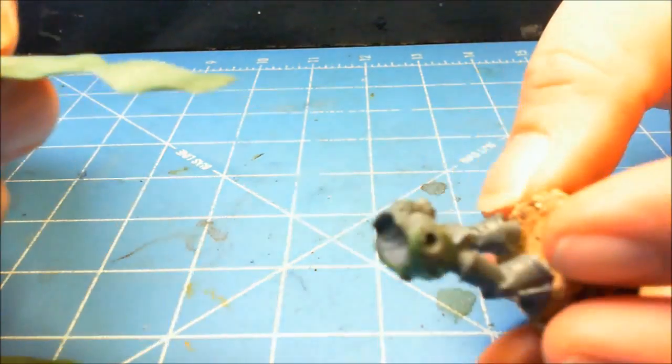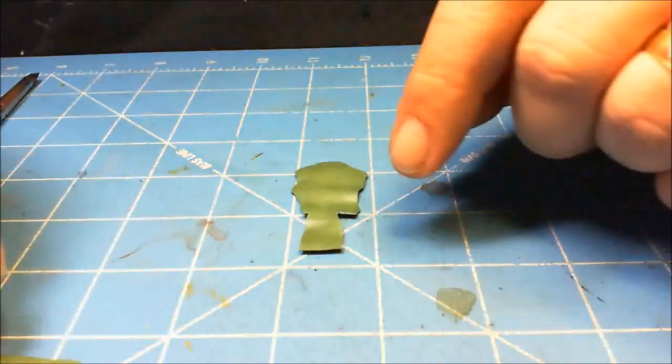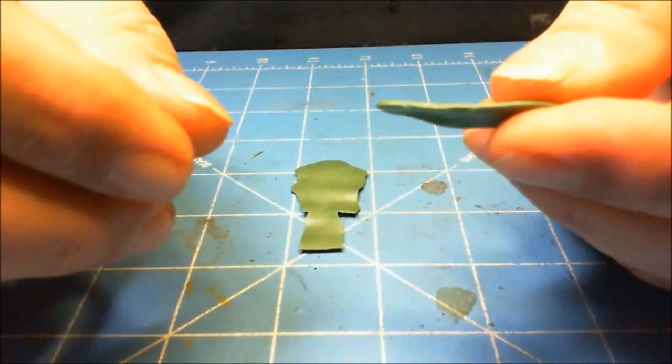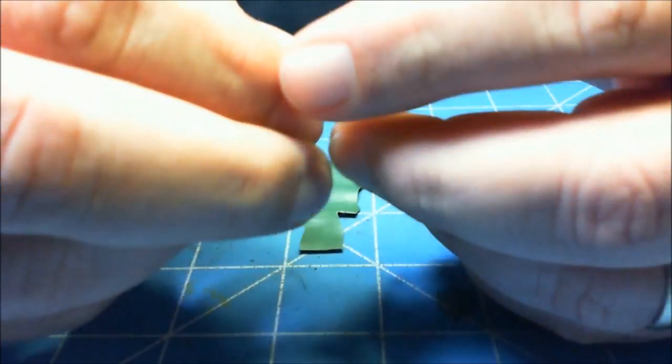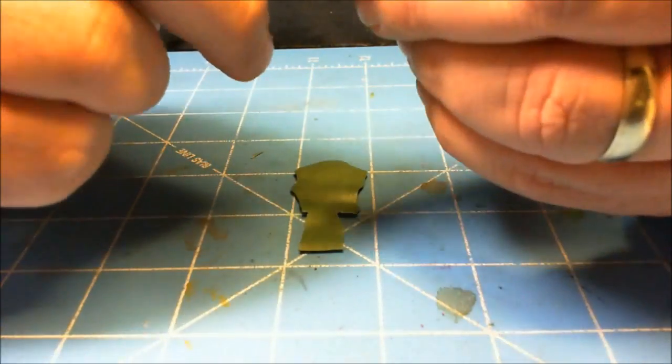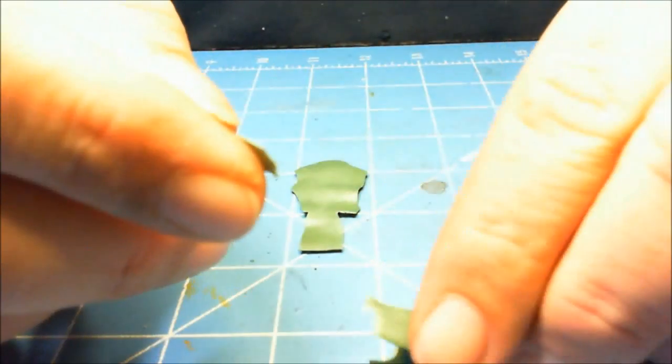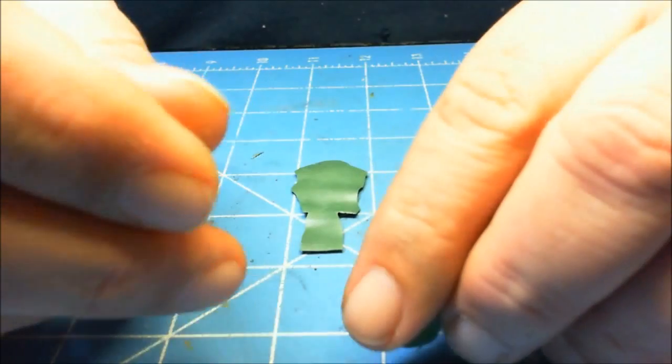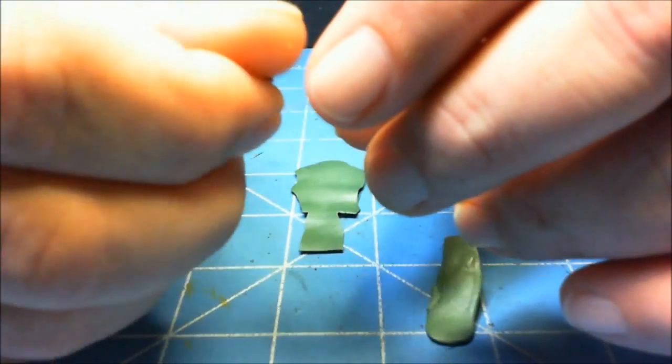It gives you a nice base to work off of. What I would do from there once it's tacked to the miniature is take my green stuff and snip off a little piece of it, not a huge piece, just enough to make a small little tube or snake of green stuff.